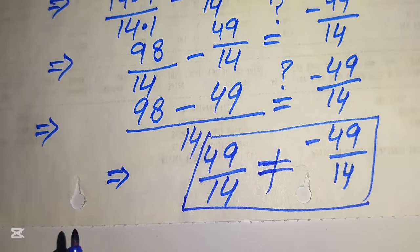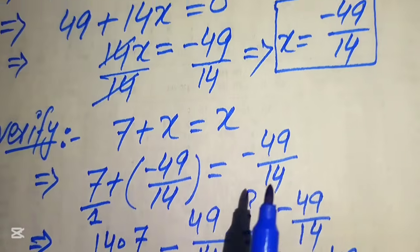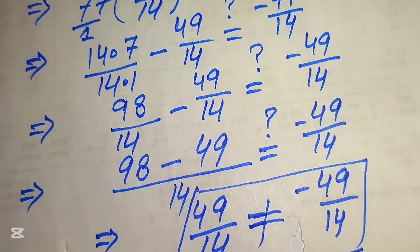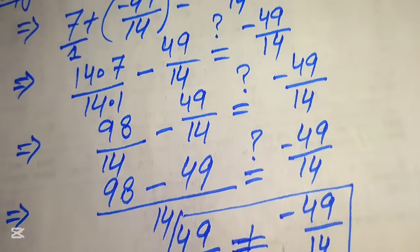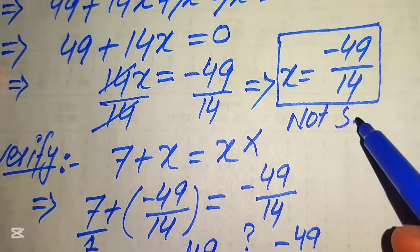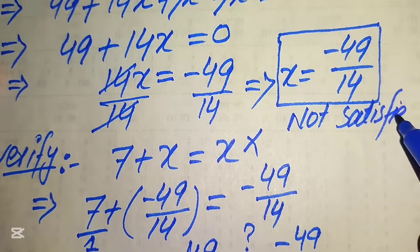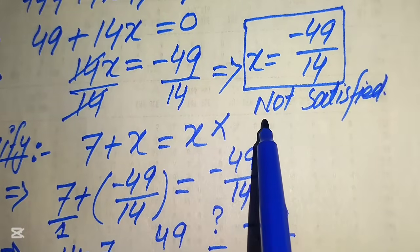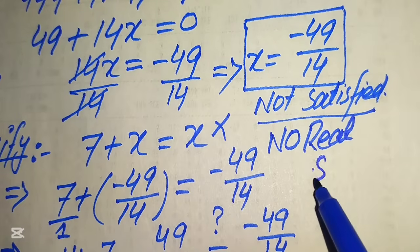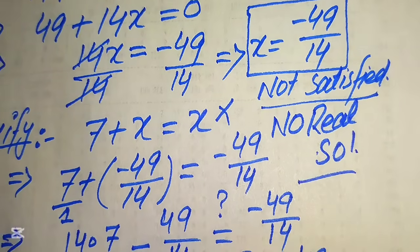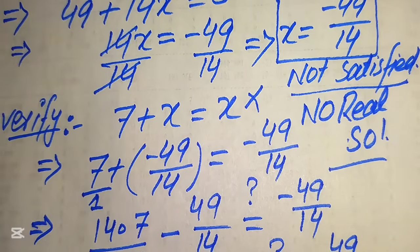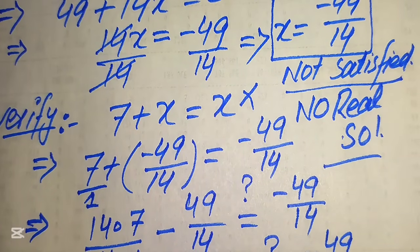Since the left-hand side (+49/14) is not equal to the right-hand side (−49/14), the value x = −49/14 does not satisfy the original equation. Therefore, our given equation has no real solution. This is the final answer from method one. Now we move to the second method.